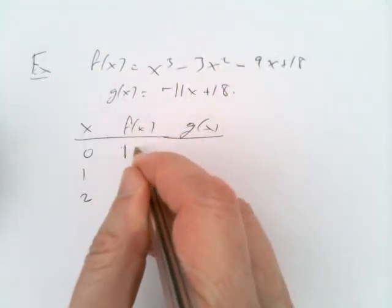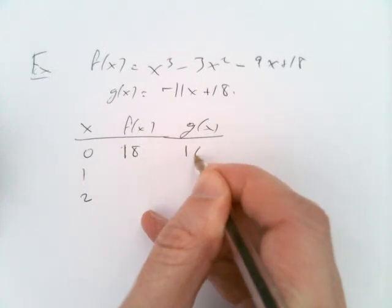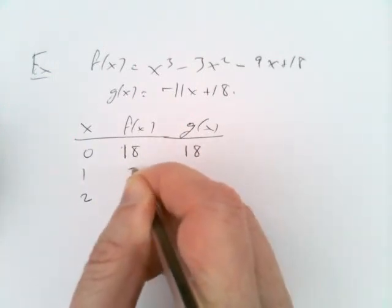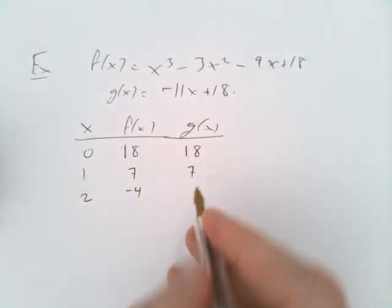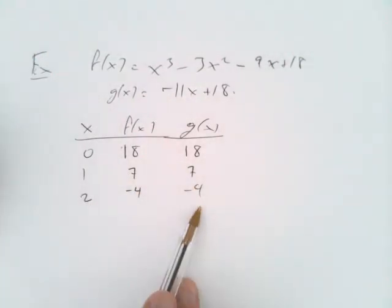It turns out when you plug in 0, you get 18 here and 18 here. You plug in 1, you get 7 here and 7 here. Plug in 2, and you get minus 4 here and minus 4 here. So these functions take exactly the same values at these three points. Are they the same everywhere else?